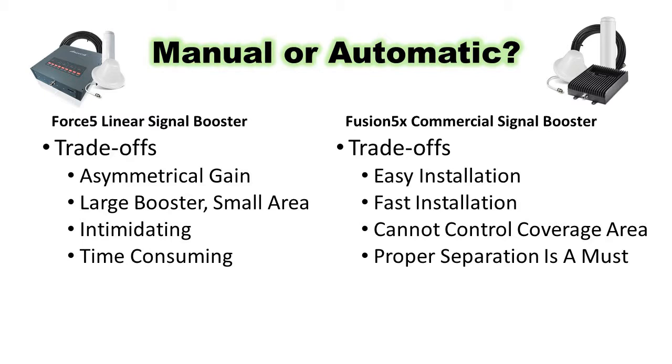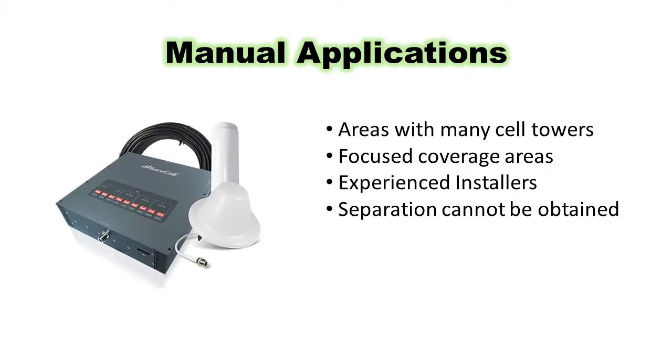Manual attenuation is the way to go if you are working in an area where there are many cell towers that could overpower the booster. It is also great for areas where you need to adjust the coverage areas. Many experienced installers like having the ability to control the gain of the booster.